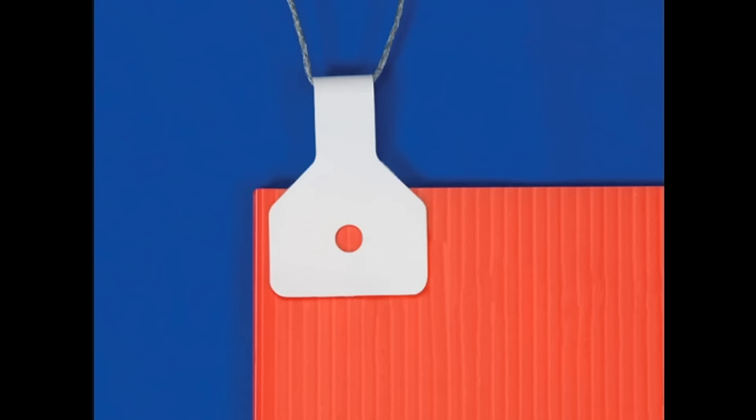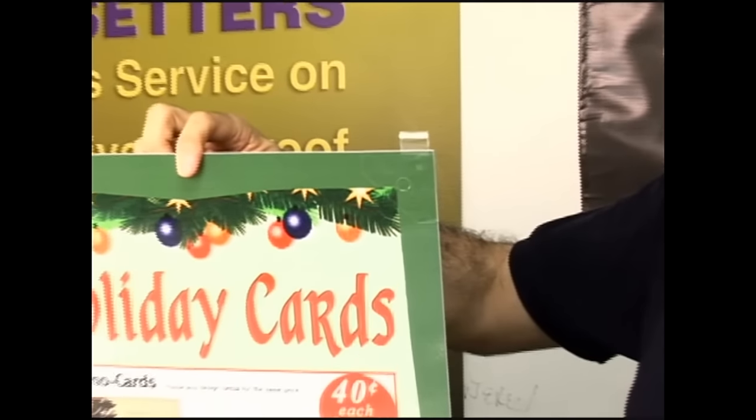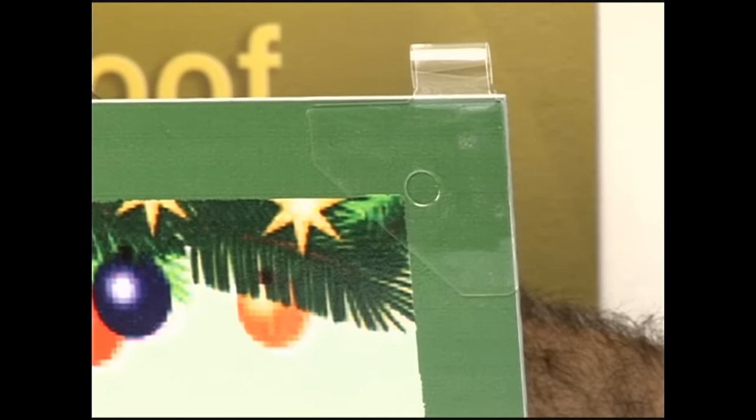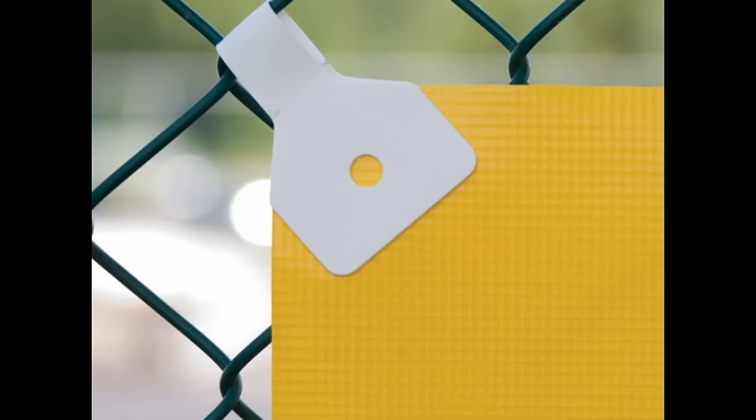The vertical mount is particularly useful for hanging rigid display boards such as foam board, corrugated plastic, or poster board. Banner Ups are available in three styles.